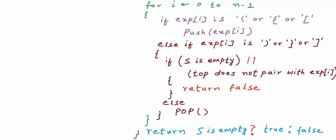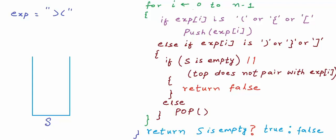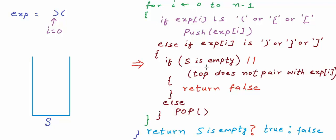Let's run through a couple of examples to verify. For the first test case, we create a stack of characters. The first character is a closing parenthesis — the if condition for opening symbol is false. We go to the else condition and check if the stack is empty. The stack is empty, so there is no opening counterpart for this closing symbol — we return false, concluding the parenthesis are not balanced.